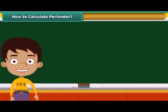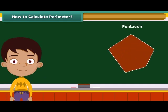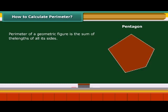Now that you have understood what perimeter stands for, let us try to calculate the perimeter of a pentagon. We have seen that the perimeter of a geometric figure is the sum of the lengths of its sides. A pentagon is a closed geometric figure of five sides.